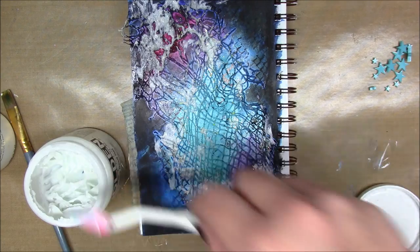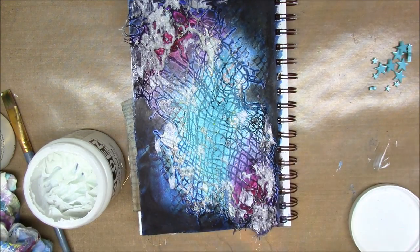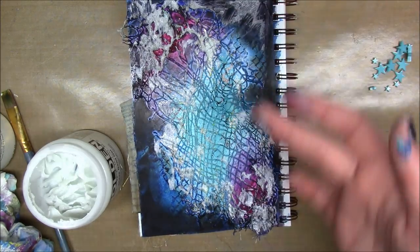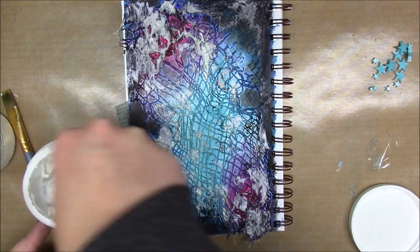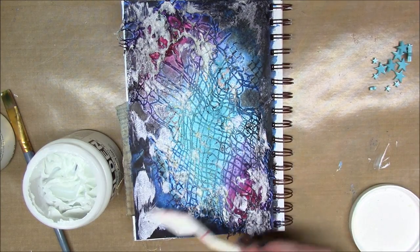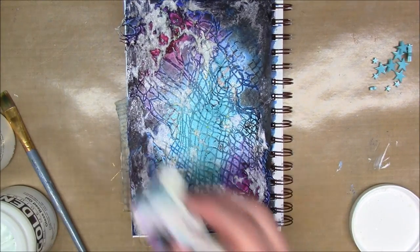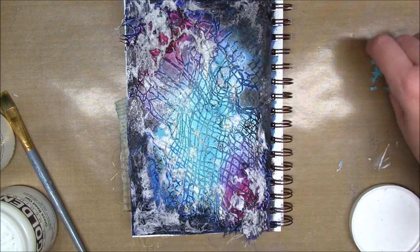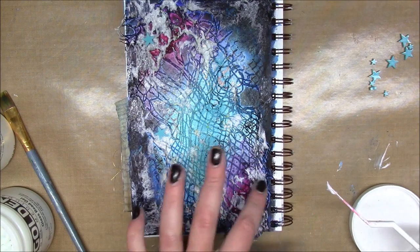Now I'm going in with the golden glass bead gel and using my palette knife to apply it so it catches on the texture of the creepy cloth. I'm also applying it to the outer corners with a palette knife but then using my finger to disperse it so it's not so clumpy.